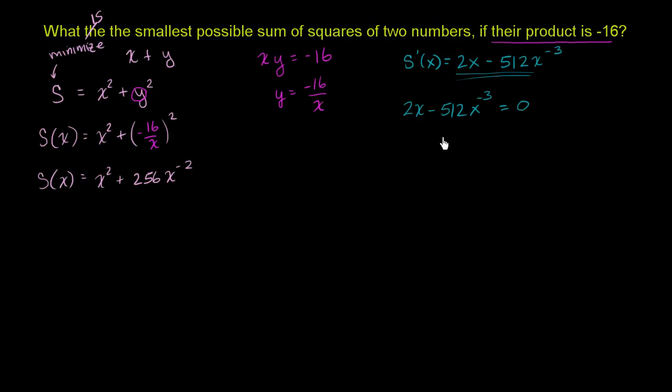Well, we can add 512 x to the negative 3 to both sides. So you get 2x is equal to 512 x to the negative 3rd power. We can multiply both sides times x to the 3rd. So all of the x's go away on the right-hand side. So you get 2x to the 4th is equal to 512. We can divide both sides by 2. And you get x to the 4th power is equal to 256. We could take the square root of both sides. So x squared is going to be equal to 256 is 16 squared, so this is 16. This is going to be x squared is equal to 16, or x is equal to 4.